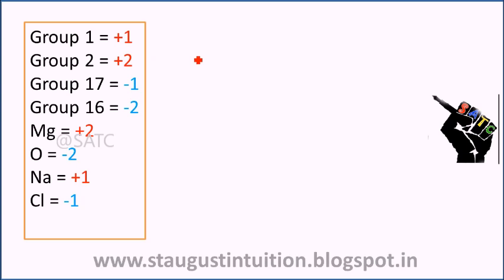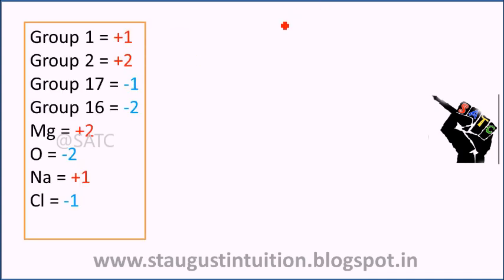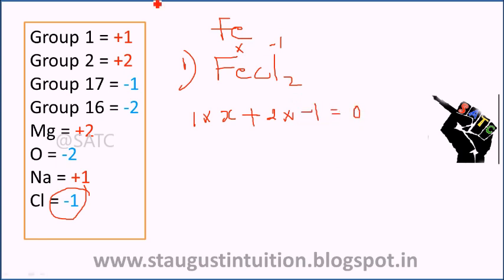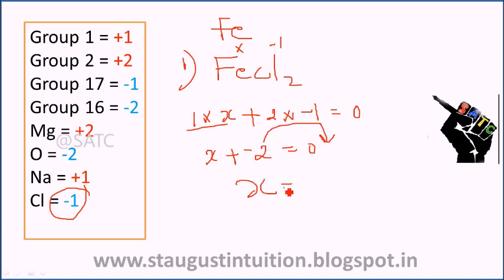First question: find the oxidation number in FeCl2. Let Fe = x. x plus 2 × (−1) = 0, so x − 2 = 0, therefore x = +2. The oxidation number of Fe in FeCl2 is equal to +2.